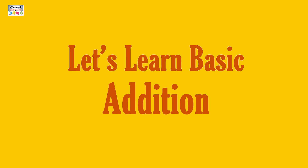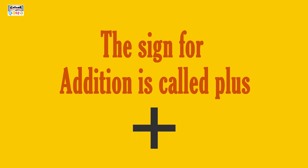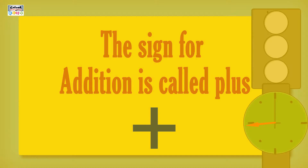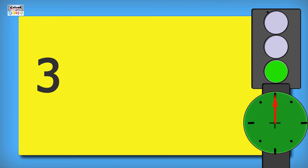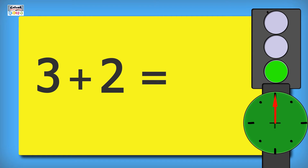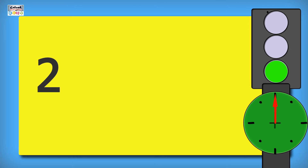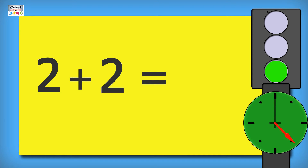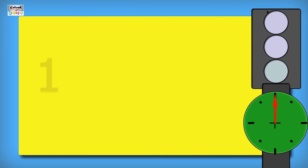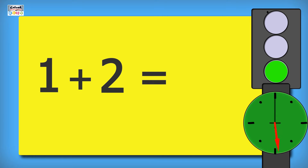Let's learn basic addition. The sign for addition is called plus. 3 plus 2 is equal to 5. 2 plus 2 is equal to 4. 1 plus 2 is equal to 3.